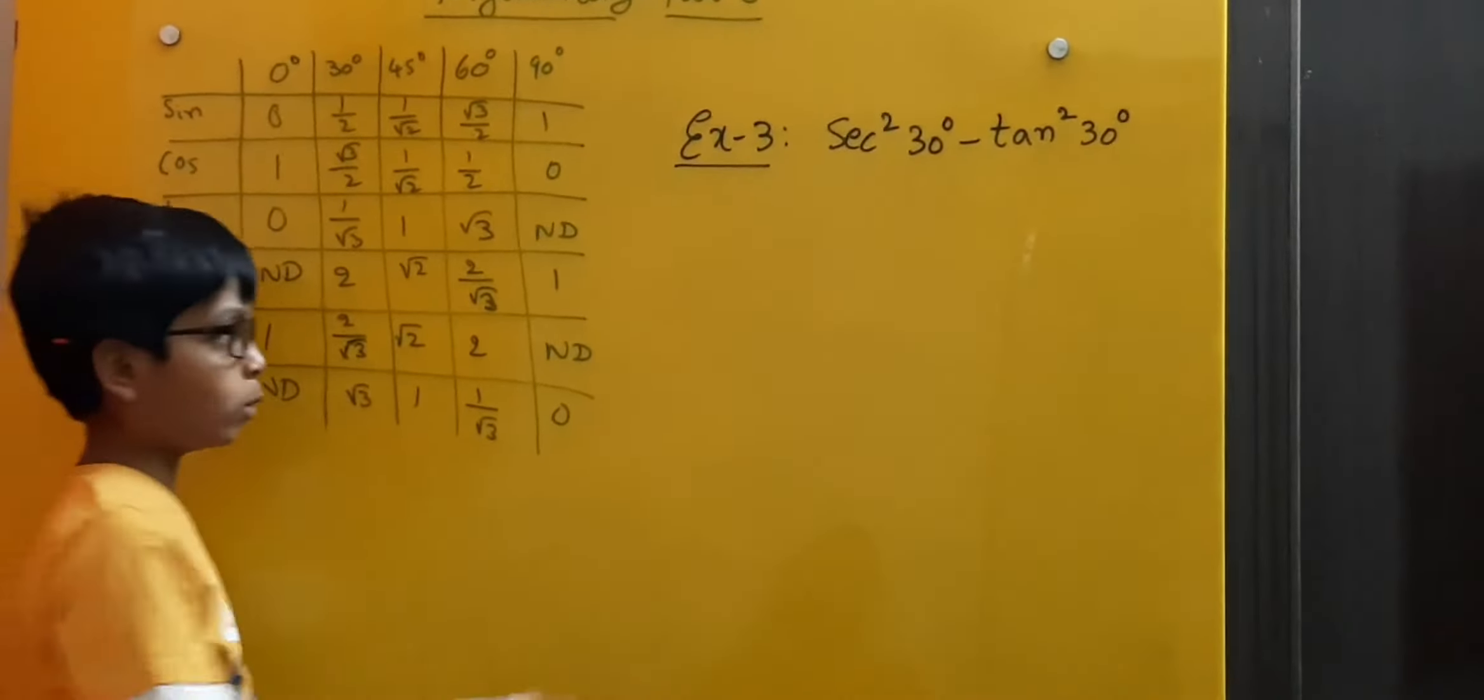Here 4 by 3, the denominator is the same, so we subtract the numerators. Is equal to, here 4 minus 1 is 3 by 3 which is 1. So secant square 30 minus tan square 30 is equal to 1.